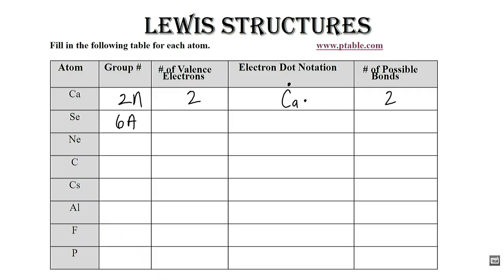It's in group six A, that means it has six valence electrons. The group number tells you the number of valence electrons of your element.